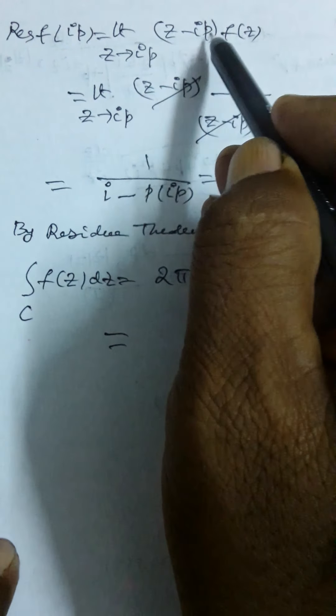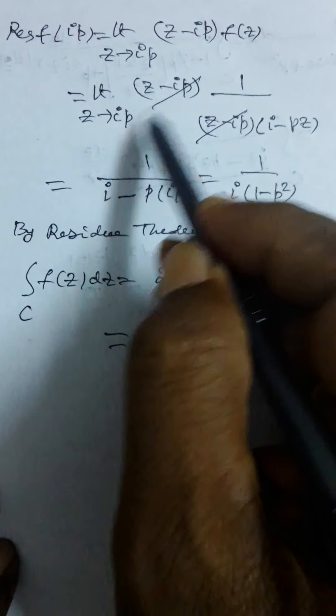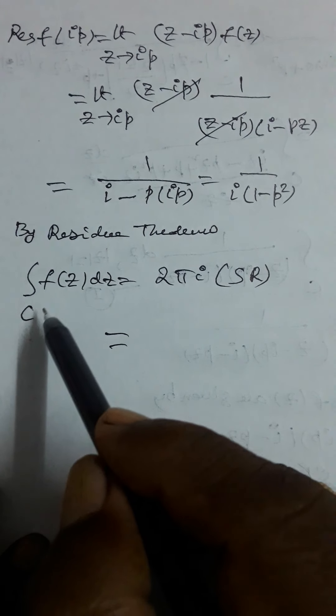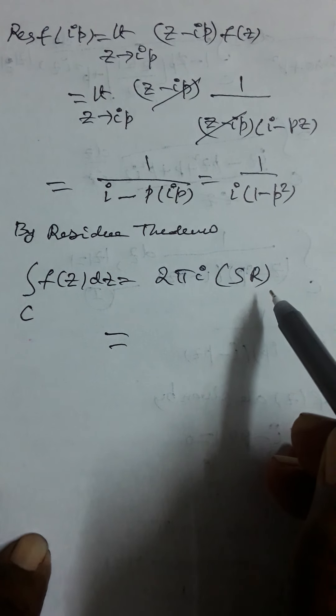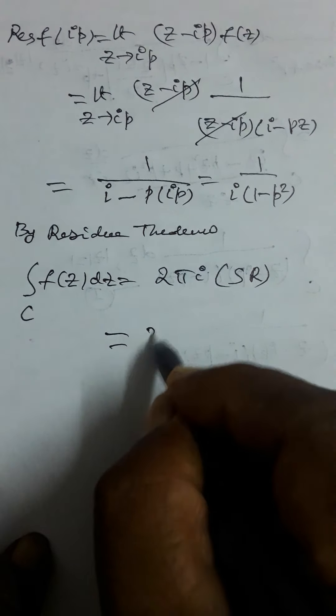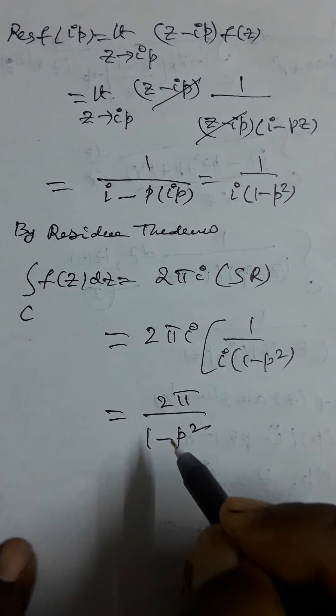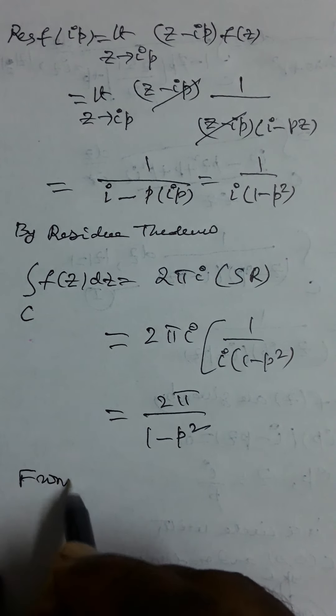The residue at z = ip: using the formula for a simple pole, limit as z → ip of (z − ip)·f(z). After z − ip cancels, putting z = ip gives 1/[i·(1 − p²)]. By the residue theorem, the integral over C of f(z) dz = 2πi · 1/[i·(1 − p²)] = 2π/(1 − p²).